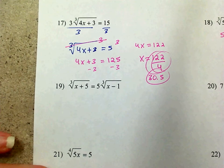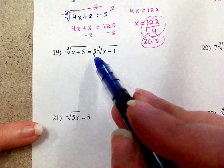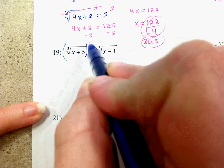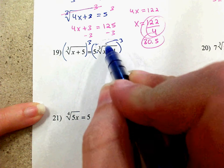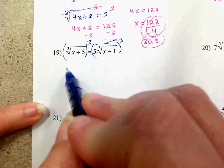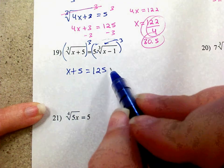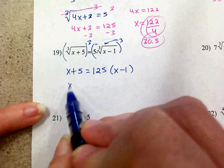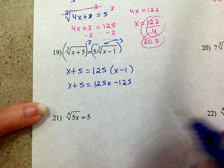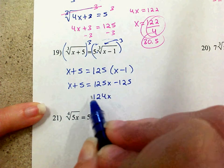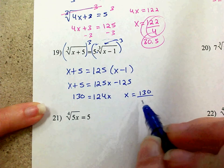Let's start with 19. In order to get rid of the cubed root, I still have to cube, but I can't get rid of this 5. So I'm going to cube both sides and understand that when I cube things that are being multiplied, I have to distribute the power. So the cubed root cubed is x plus 5. 5 cubed is 125. And the cubed root of x minus 1 cubed is just x minus 1. So I've got x plus 5 equals 125 times (x minus 1), which gives 125x minus 125.